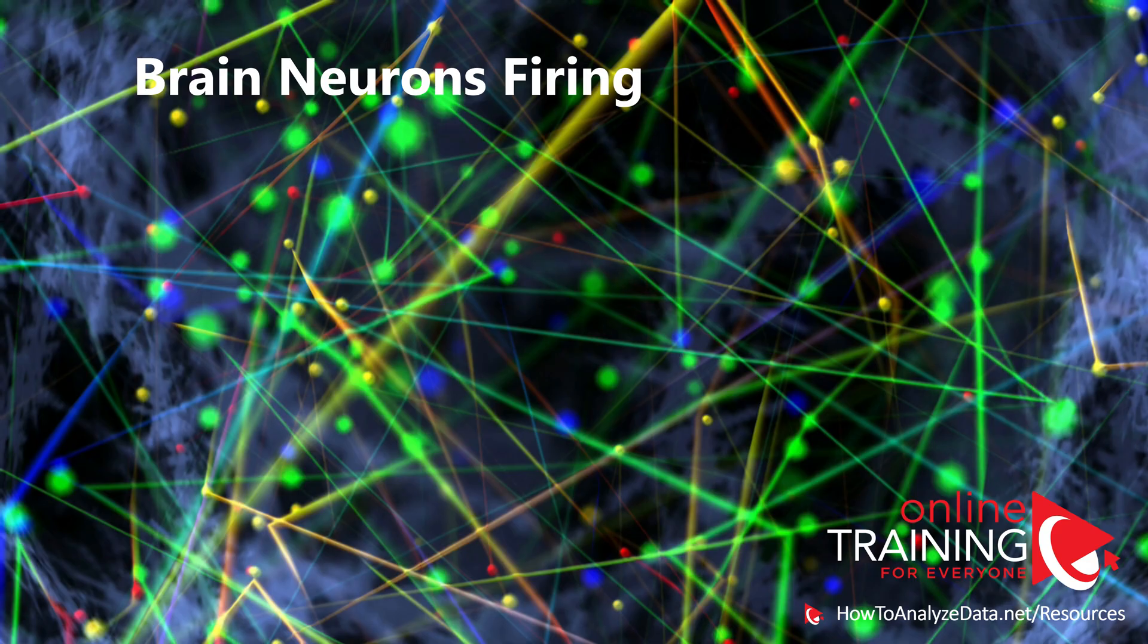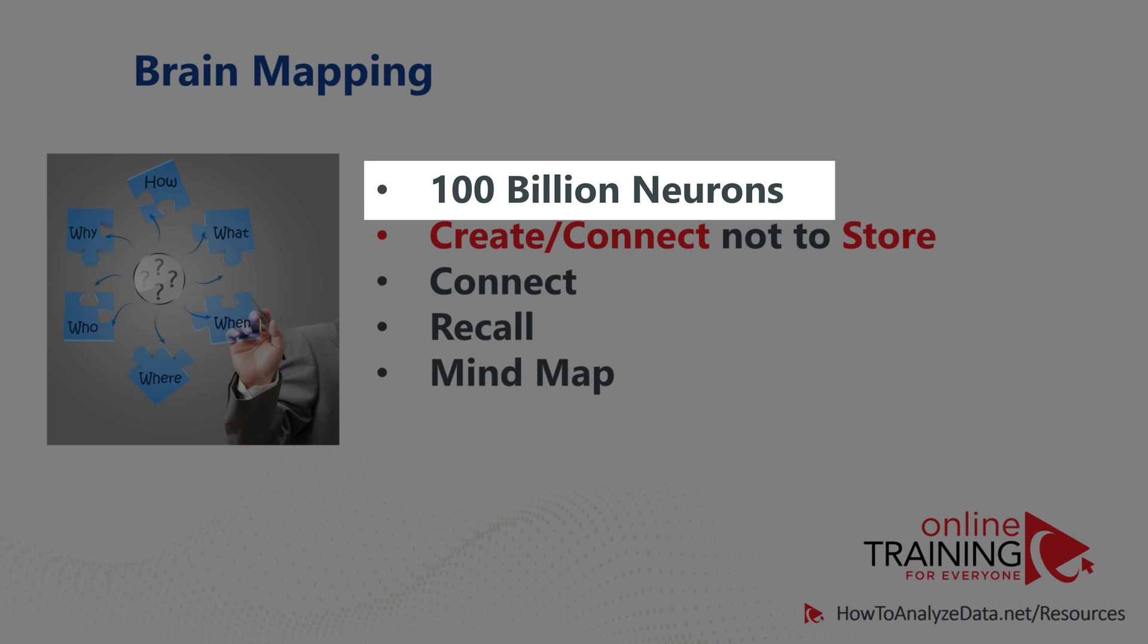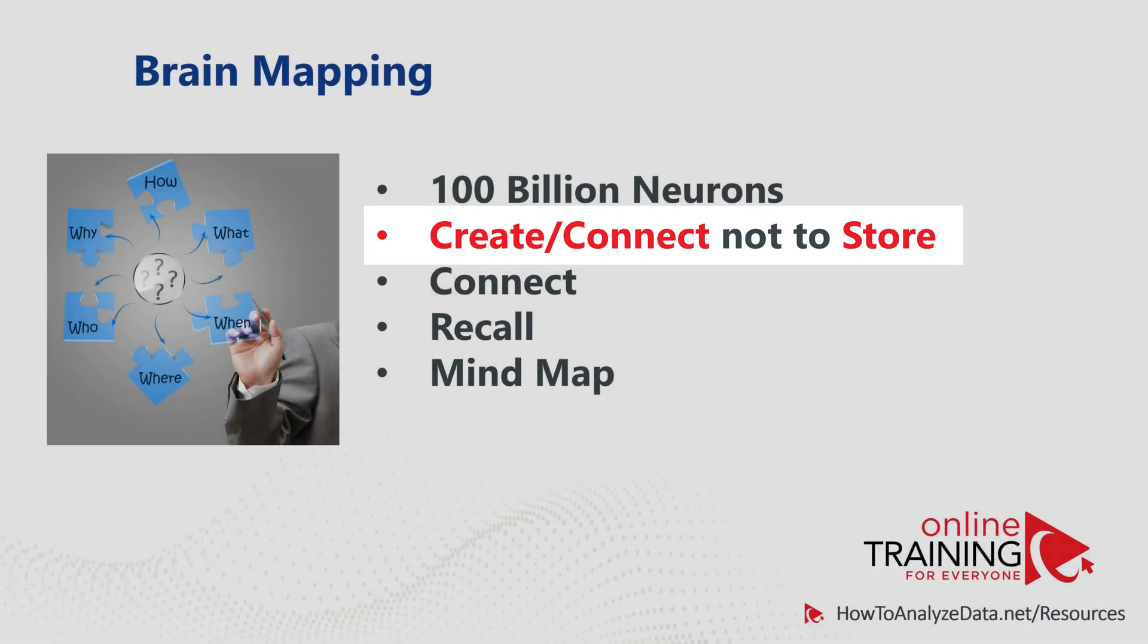One of the main reasons mind mapping diagram is so effective is because it comes natively to our brain. The way neurons fire in our brain matches precisely how things are built in the mind mapping diagram. Even though our brain contains 100 billion neurons and support cells, it works best to create and connect ideas and thoughts, and not to store them.